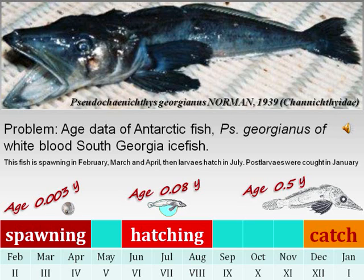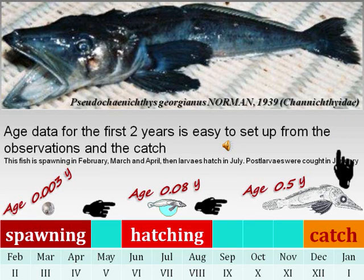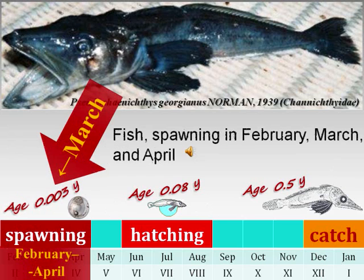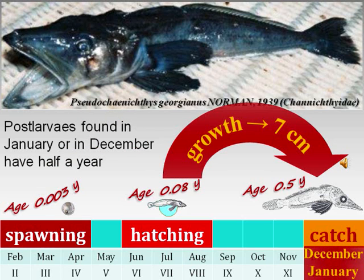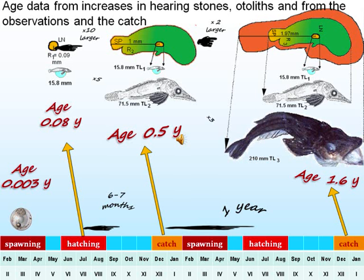Problem. Age data of Antarctic fish Pseudohanictis georgianus, the white-blooded South Georgia icefish. Age data for the first two years is easy to set up from observations and the catch. Fish spawn in February, March and April. Larvae hatch in July. Post-larvae found in January or December have half a year of age.